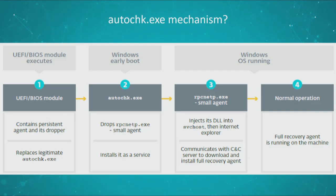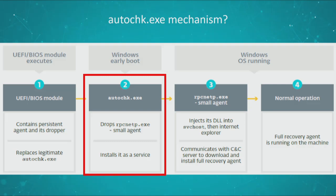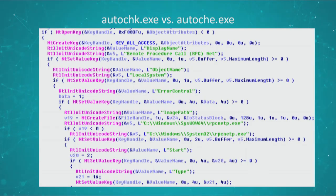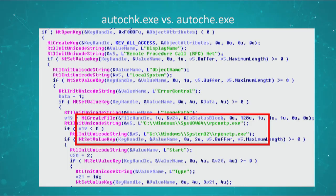Going back to the architecture slide — we already know that step three could have been what these guys were doing, just using a regular backdoor to install the small agent. But let's see what is the step before that — it's actually autochk.exe, the executable responsible for checking integrity, which was replaced by LoJack to install the small agent. We went in and tried to find something similar that would tell us these guys might be after the firmware itself. And we found an interesting file — instead of being called autochk.exe, it was autochi.exe, only one letter change, but the behavior of the executable was very similar. It's installing a service with the same name that the LoJack solution uses, and pointing to the location of the small agent executable.